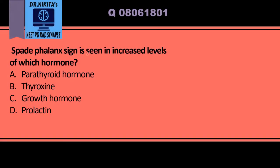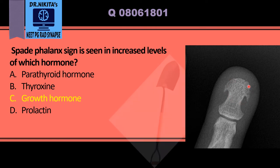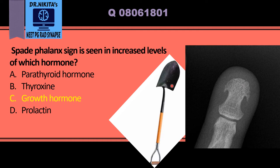Spade phalanx sign is seen in increased levels of growth hormone, that is acromegaly. In acromegaly, there is hypertrophy of the distal phalangeal tuft, which appears like a spade. A spade is an instrument like this, so the hypertrophied distal phalangeal tuft has an appearance like a spade — so it is called spade phalanx sign, or it is also called spade-like hand.